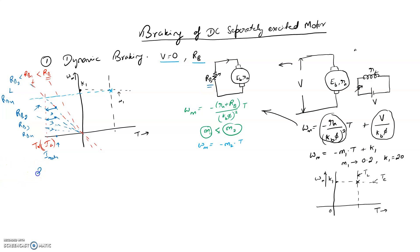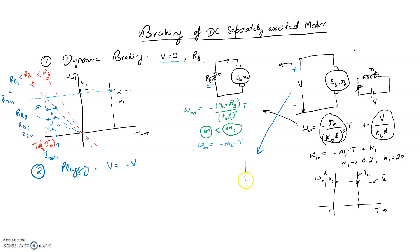Another braking method is plugging. Plugging is simple — we replace V with minus V, meaning we change the polarity of the supply voltage. If the terminals are plus and minus, we reverse them to minus and plus and give it to the armature. To make sure the current rating is not exceeded when the polarity is reversed, add an extra resistance RB in series with the armature. So RB is introduced in the same armature circuit.